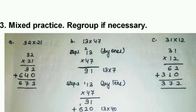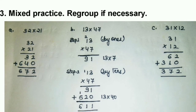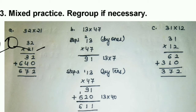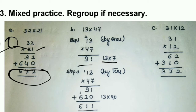Question 3 — Mixed practice: regroup if necessary, otherwise not required. For 32 times 21: multiply by ones — 32 times 1 is 32. Then multiply by 20 — 32 times 20 gives 640. Adding gives 672. No regrouping was required here. Next: 13 times 47 — multiply by ones first: 13 times 7 gives 91.